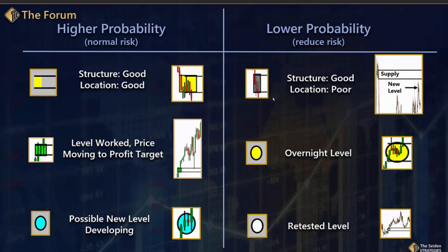A gray box typically means good structure but poor location. If we're going to give up on location, we better really make up for it on structure — structure better be really good, otherwise it just won't meet the minimum criteria. For example, this supply zone above: assume it's a yellow box. Price comes back to that level and falls. But inside that drop, a new supply zone develops — now this activity is in the novice space, not out at the extremes where competition to buy and sell is tremendous.